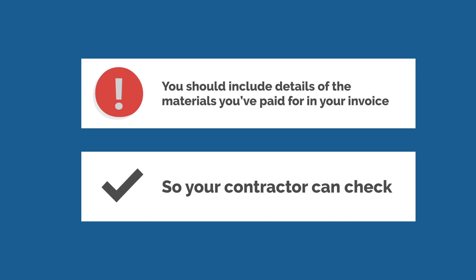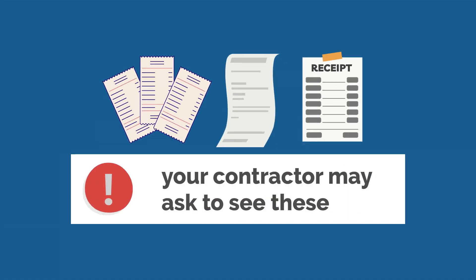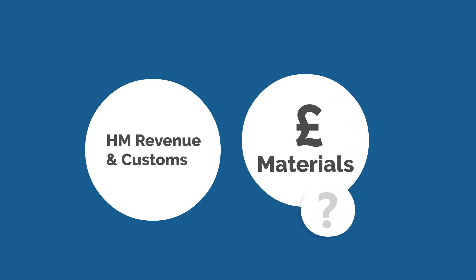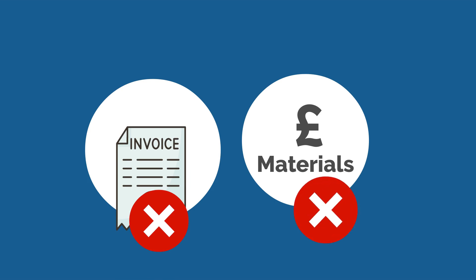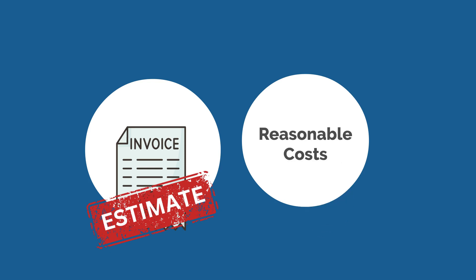It's a good idea to keep records, such as receipts, for any materials you've used, as your contractor may ask to see these. HMRC can query the cost of materials if they don't look right. If you don't give details or can't provide proof, your contractor can make an estimate of the material costs based on what they think is reasonable.